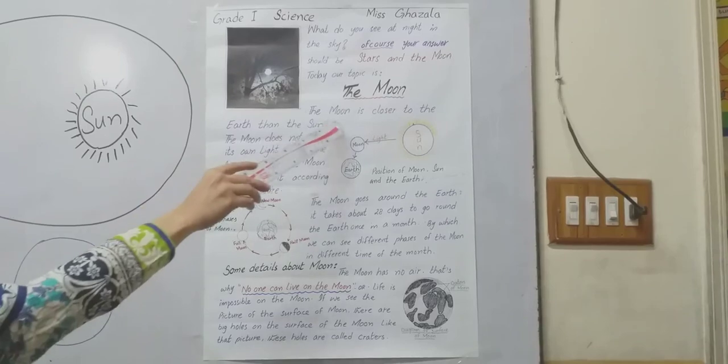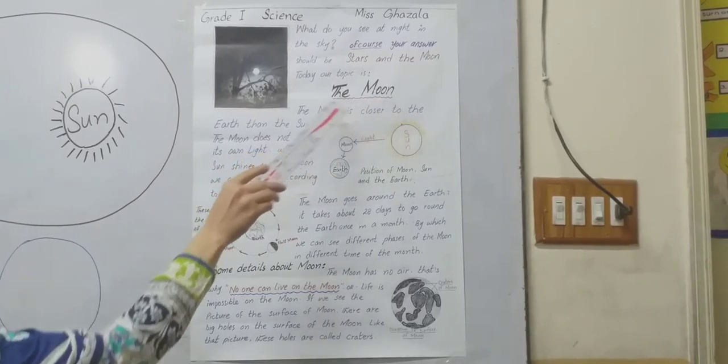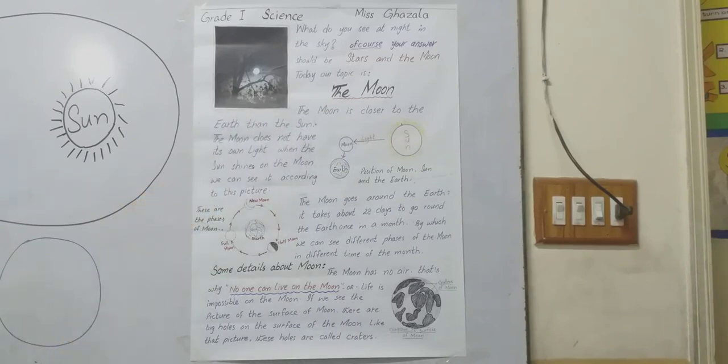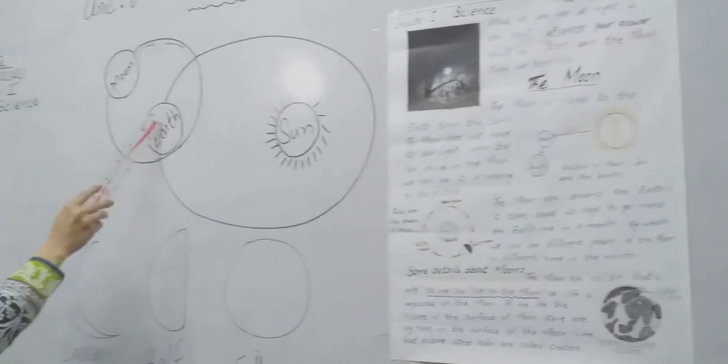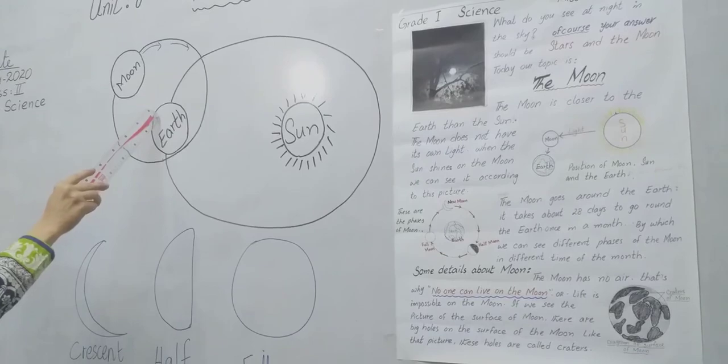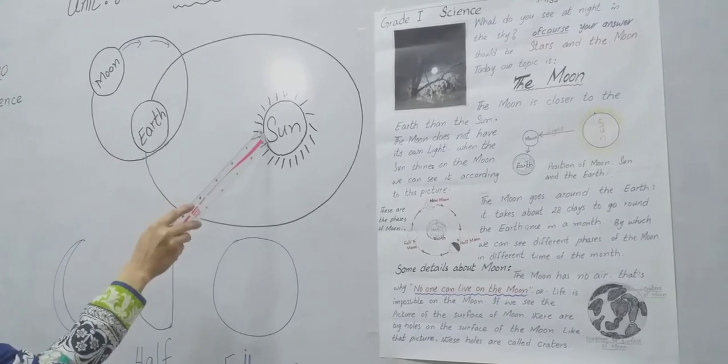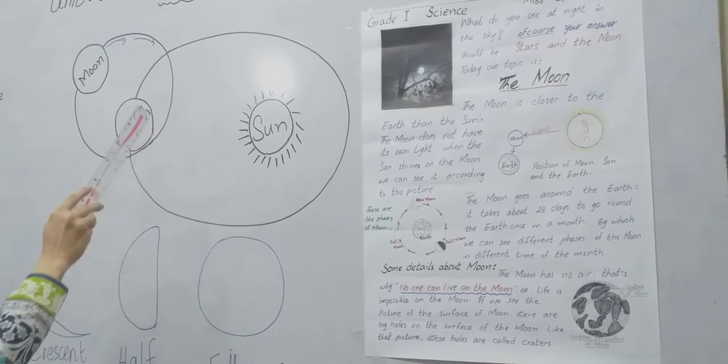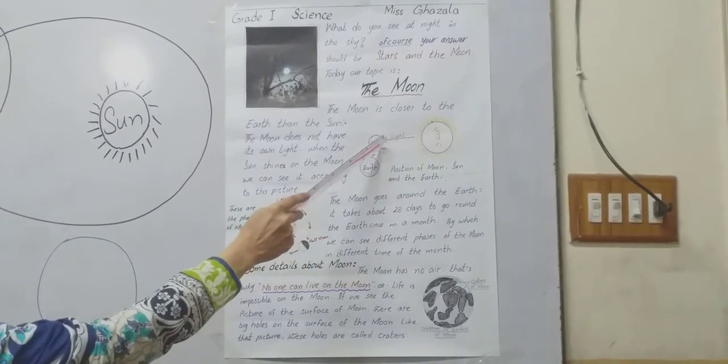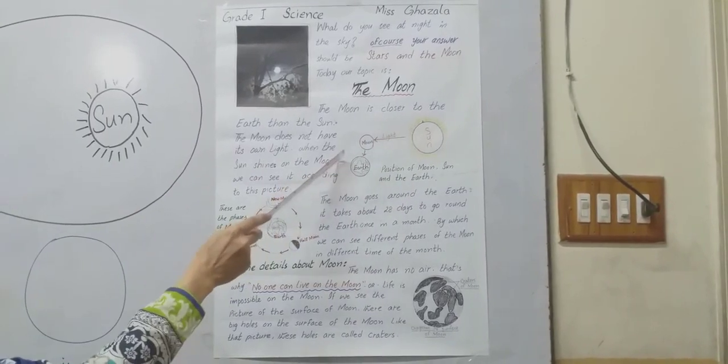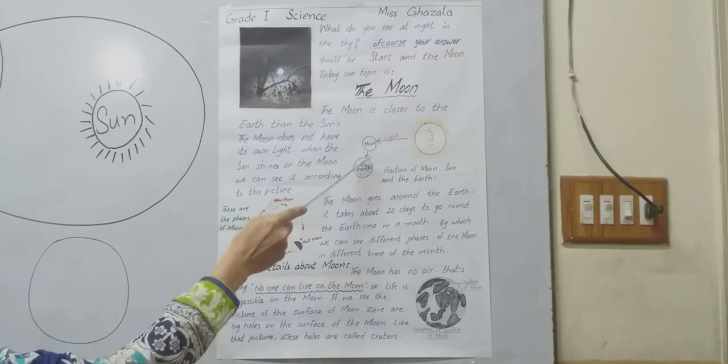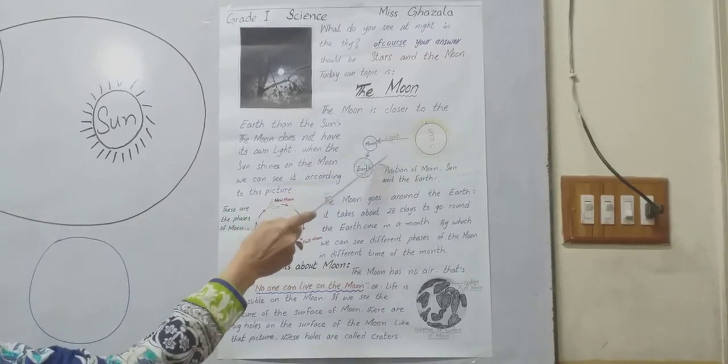The moon is closer to the earth than the sun. It means the moon is near to the earth and the sun is far from the earth. This shows the position of moon, sun, and the earth - the distance between moon and earth, moon and sun, and earth.